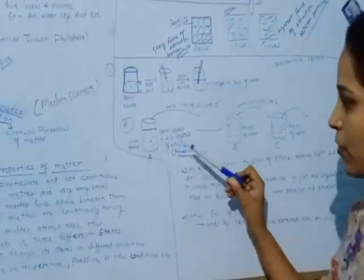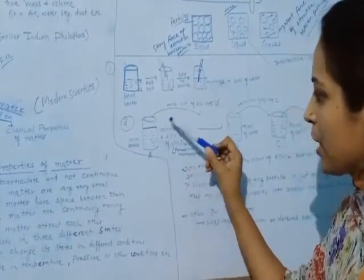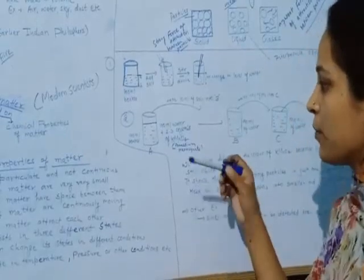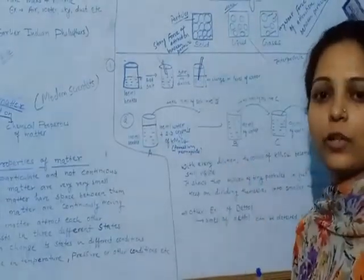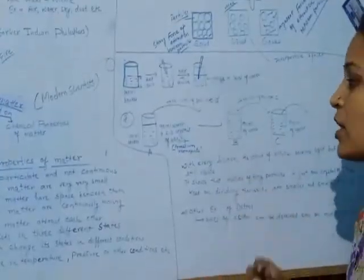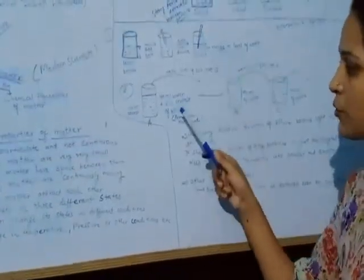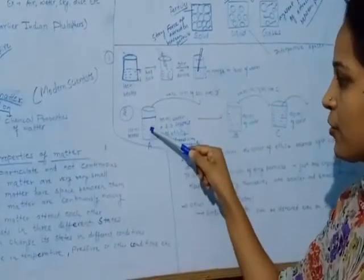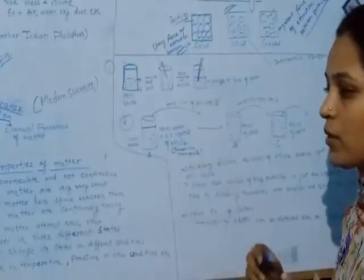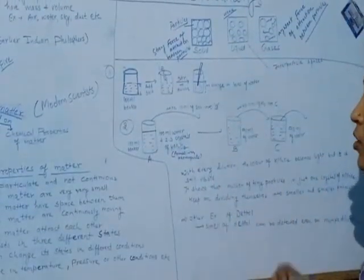We take a 100 ml beaker with 100 ml of water and add 2 to 3 crystals of KMnO₄ — potassium permanganate, which is a pink-colored crystal. We add it to 100 ml of water in beaker A. The solution becomes deep pink in color.